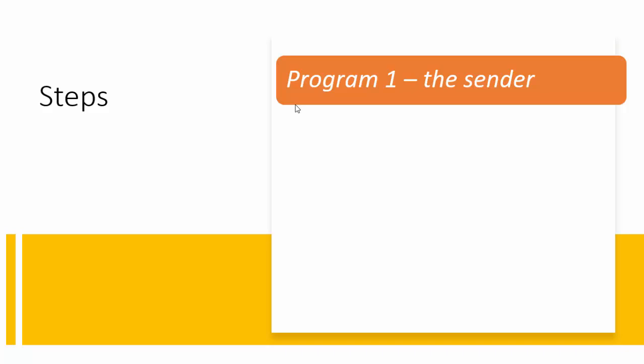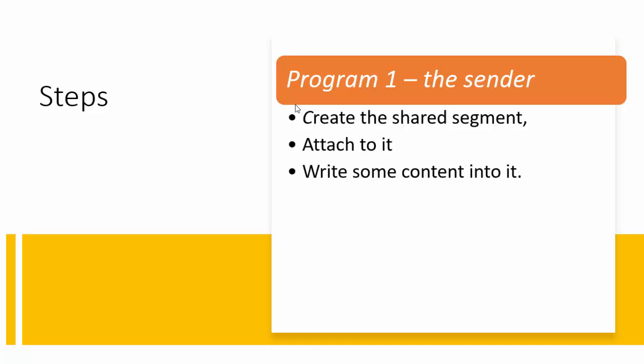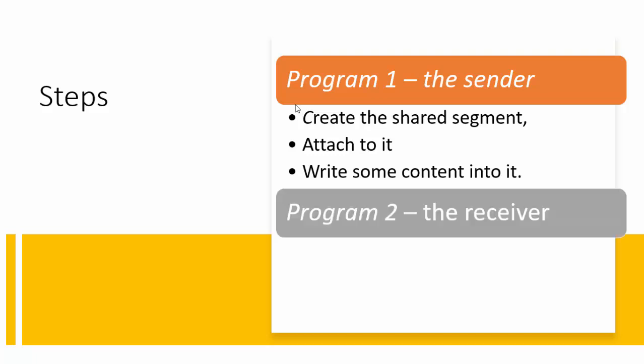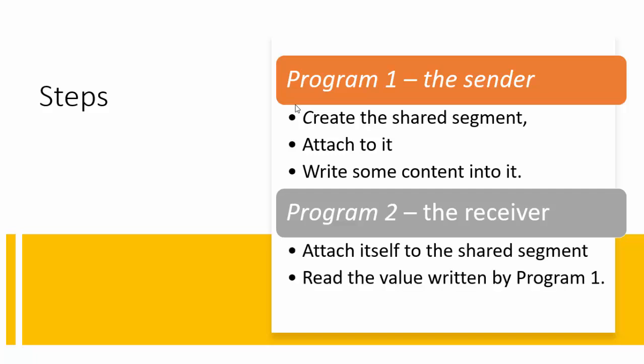We will write two programs. The first program will be the sender process, which will create the shared segment, attach itself to it, and then write some content into it — so three steps: creating the shared segment, attaching to the shared segment, and writing content into it. The second program will act as the receiver, which will first attach the process to the shared segment and then read the value written by program one.